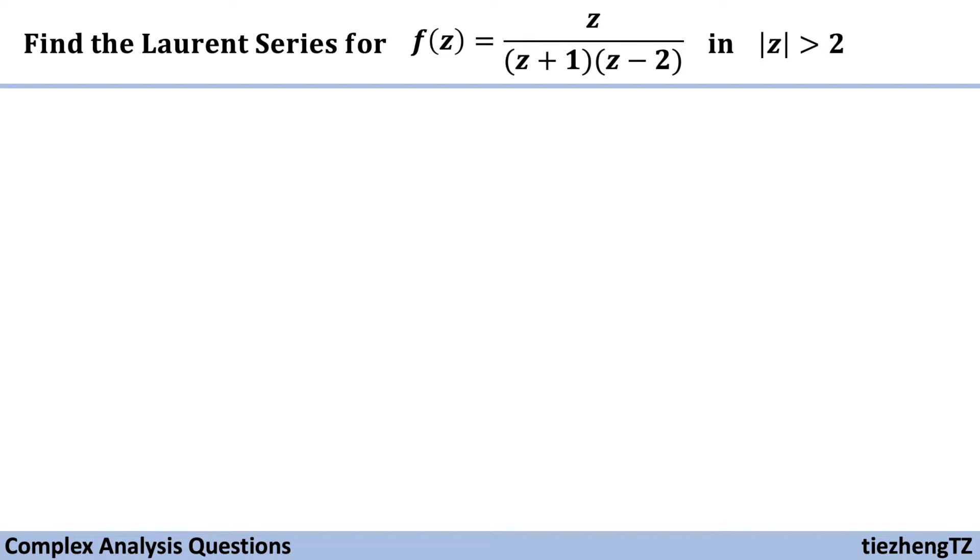Today's question is to find the Laurent series for this given function z over (z+1)(z-2) in the domain where |z| > 2.